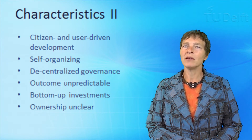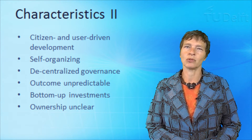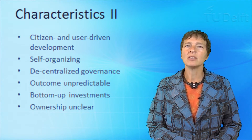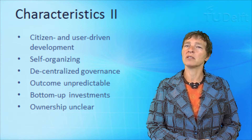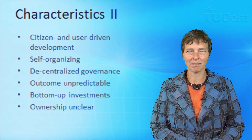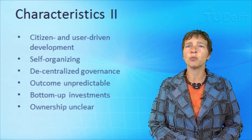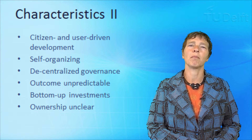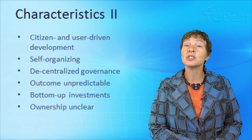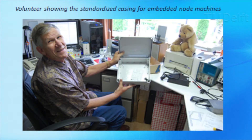Let's first list the main characteristics of inverse infrastructures. Typically, they are developed by citizens or technology users, usually volunteers. To start them off, citizens and users are prepared to privately invest in them. They are developed, operated, and managed decentrally. The volunteers self-organize and, as is the case with emergent systems, the outcome of self-organization can be very unpredictable.